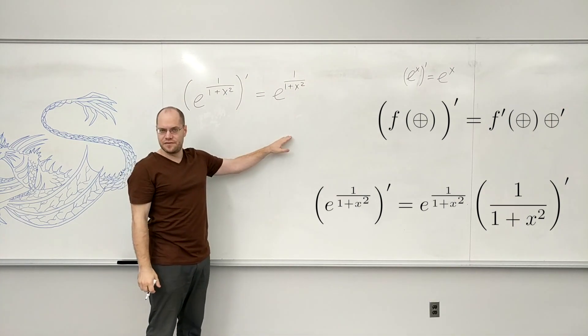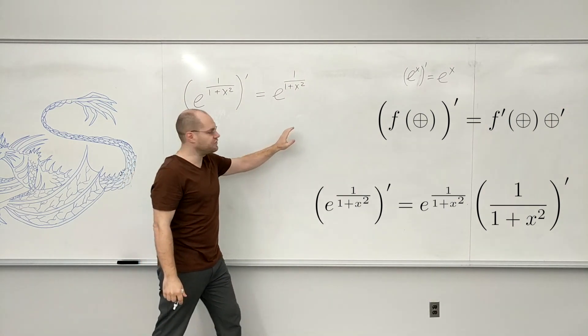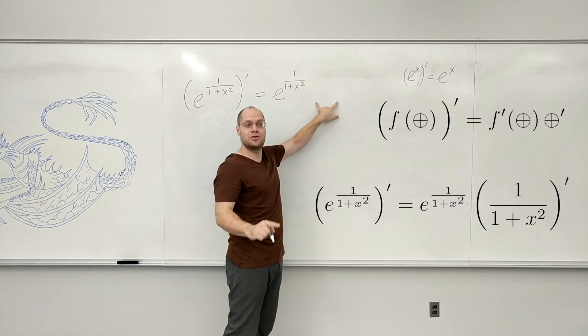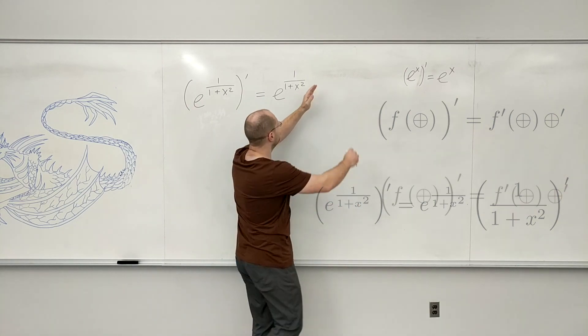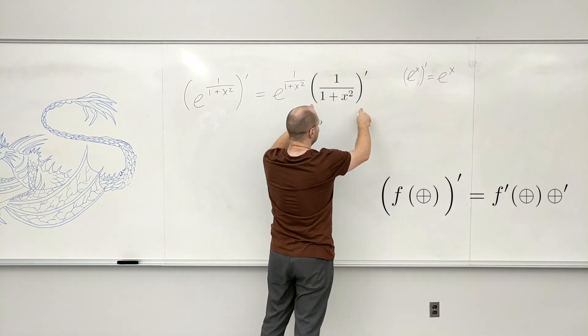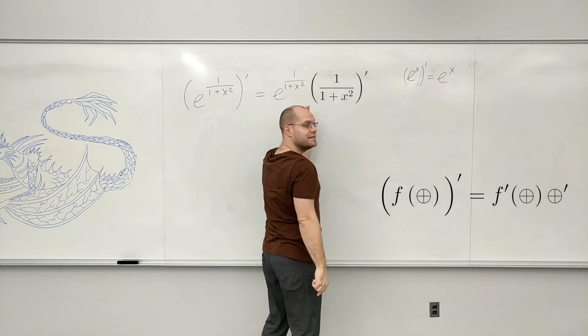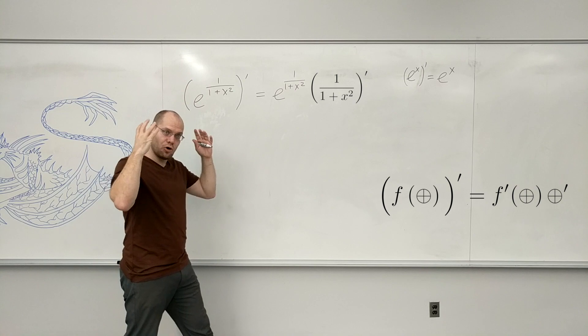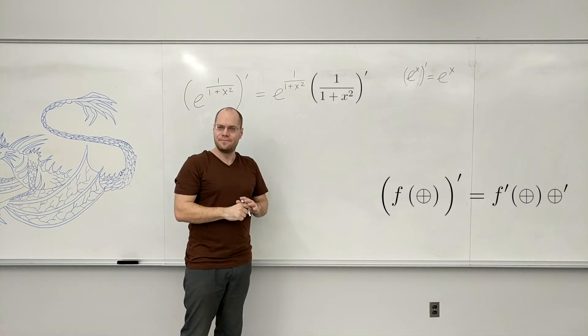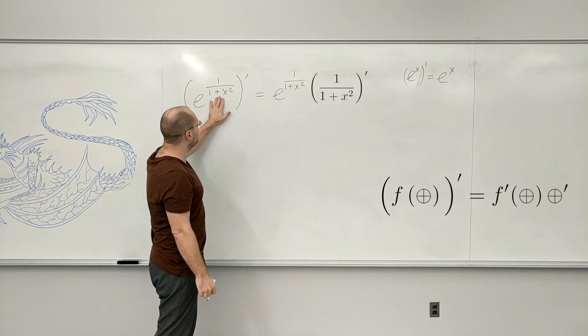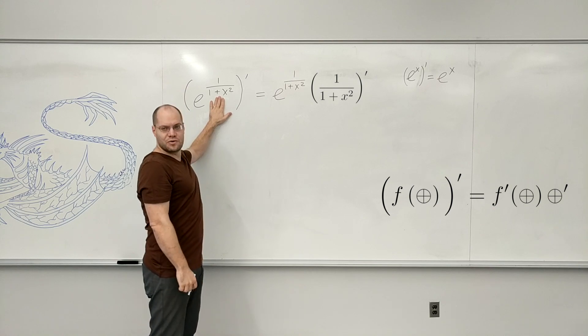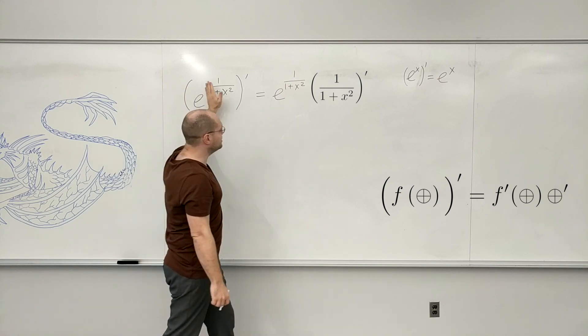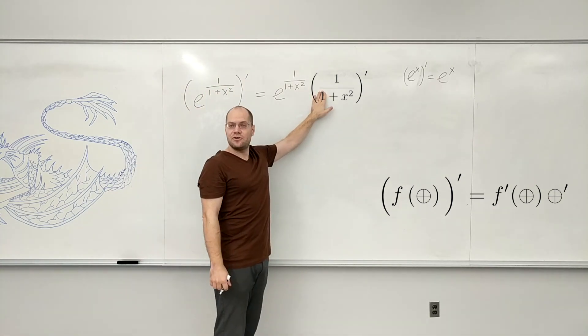You have to look at it in the simplest possible terms, throwing away all the details. What you're looking at is e to the something. The derivative is e to the something, and now you have to take the derivative of that something. You should be able to hold this information in your head and know that now I'm on the derivative of 1 over 1 plus x squared.